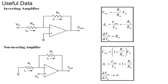Let us discuss some useful information to solve the problem. This is the inverting amplifier as shown in this figure. Here the input is given at the negative terminal of the op-amp, so this can be called an inverting amplifier. By using the concept of virtual ground and nodal analysis, these equations can be derived.